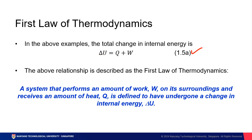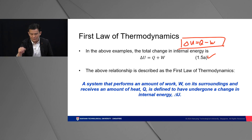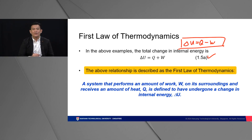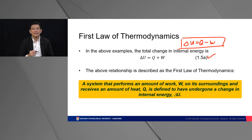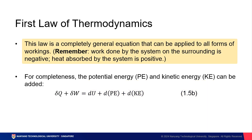In some textbooks, they use delta U equals Q minus W. Both are correct — it just depends on the perspective you take. The above relationship is a general description for the first law of thermodynamics, which states: a system that performs an amount of work W on its surroundings and receives an amount of heat Q is defined to have undergone a change in internal energy. Remember, this law is a completely general equation that can be applied to all forms of working.